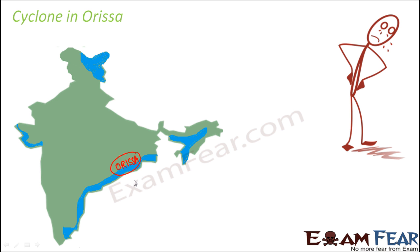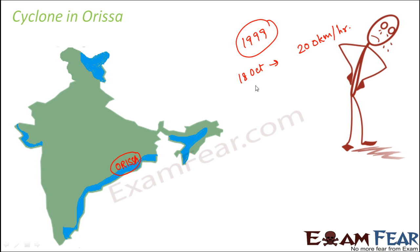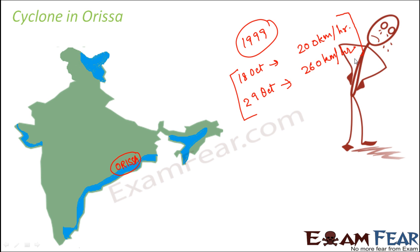One of the deadliest cyclones in Orissa happened in 1999, around the 18th of October. The wind speed during that first cyclone was around 200 kilometers per hour. Unfortunately, another cyclone hit Orissa again about 10 days later, and that time the wind speed was almost 260 kilometers per hour — even stronger than the first, making 1999 a year of tremendous suffering for the state.